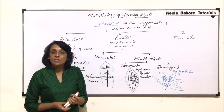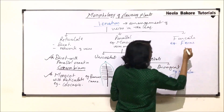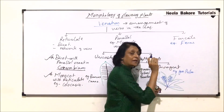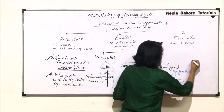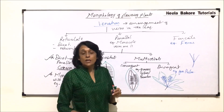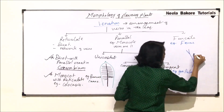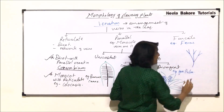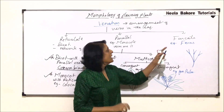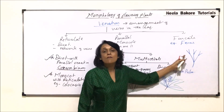Coming to the last type of venation, which is called furcate. It is a characteristic feature of ferns or pteridophytes. In this case, the midribs or main veins are many. Initially they remain undivided, and after that they show two branches — that means there is bifurcation. Furcate basically means bifurcation, and that is why this type of venation is known as furcate venation.